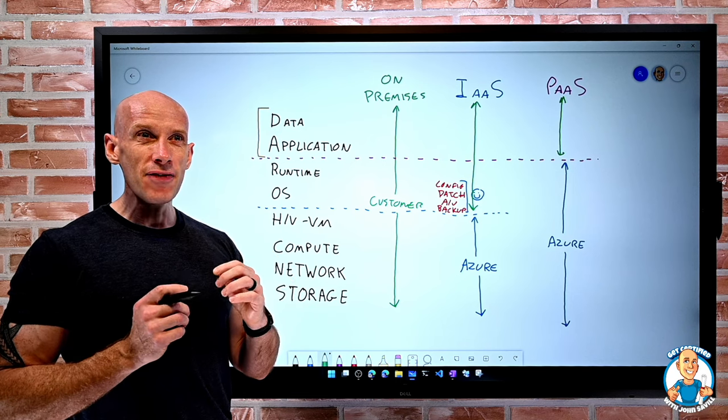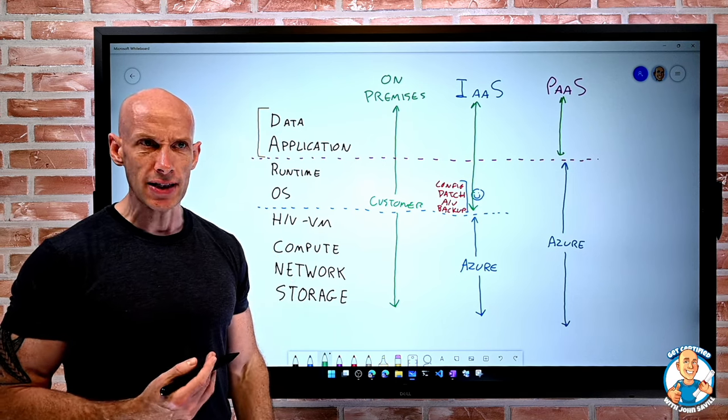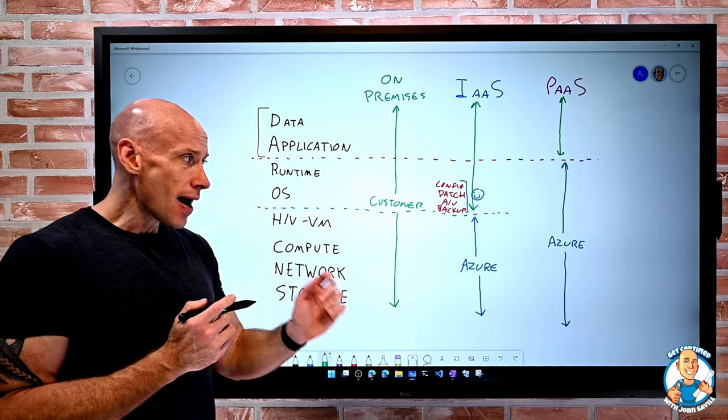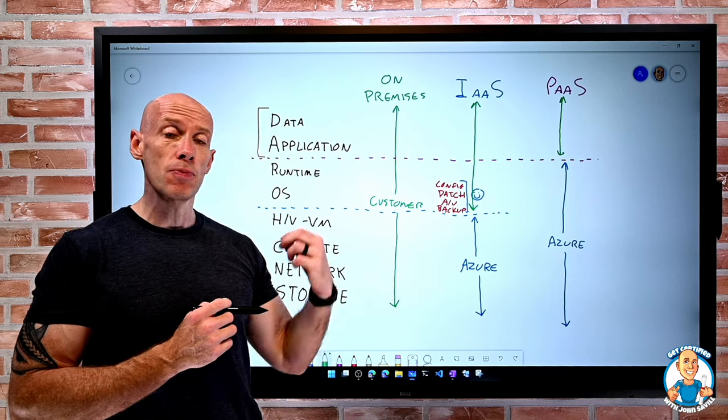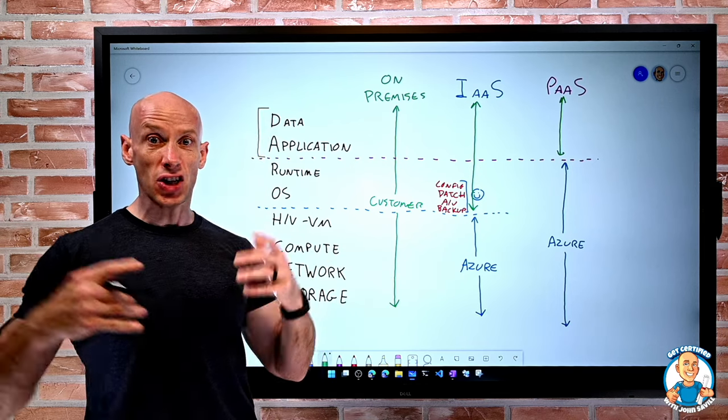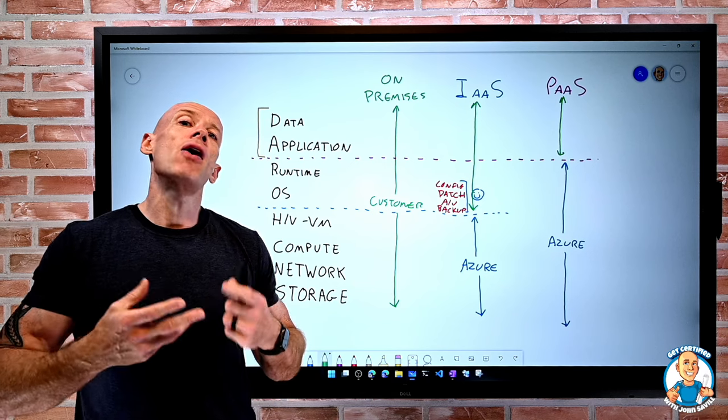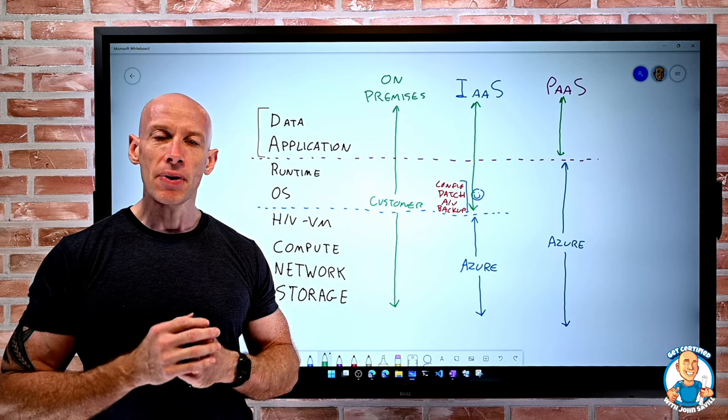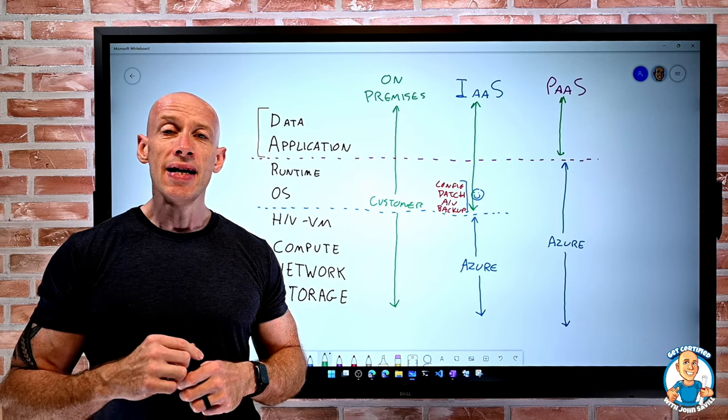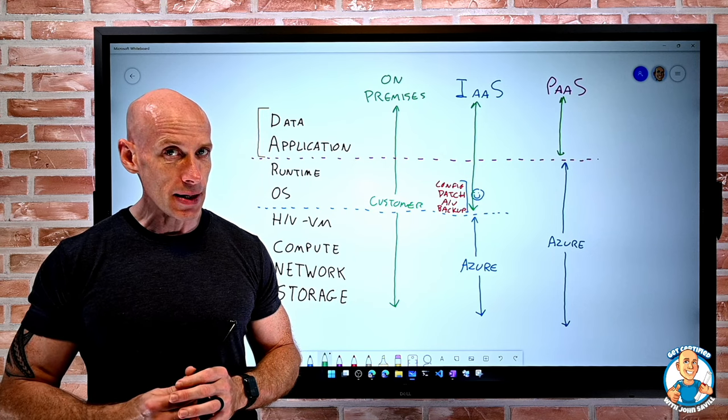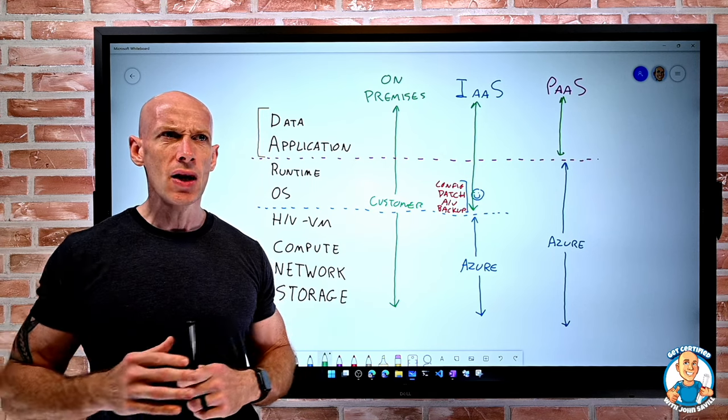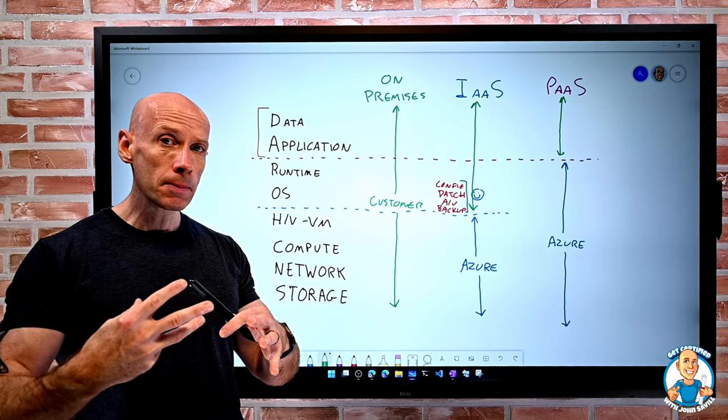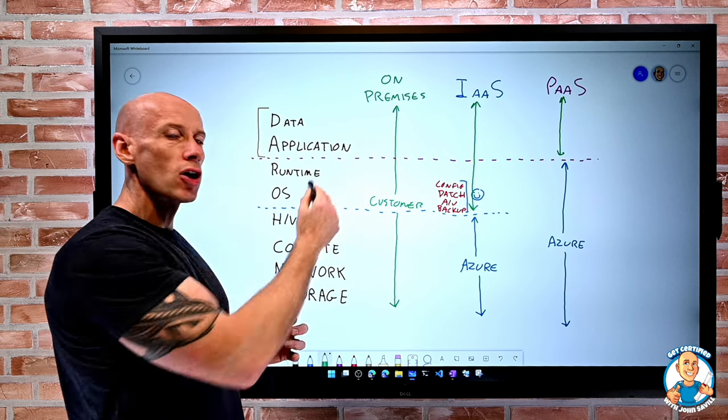Now my options are more limited. So with PaaS, because my interaction is I'm deploying my application, but I do not have full access to, for example, the operating system, there's going to be specific operating systems that are supported. There are going to be specific runtimes that are supported. There's going to be a specific level of access I get to that operating system. Am I going to get root access to that OS? No.